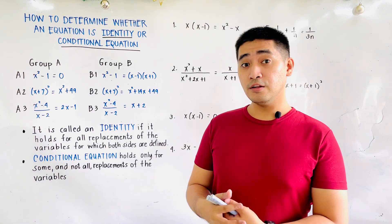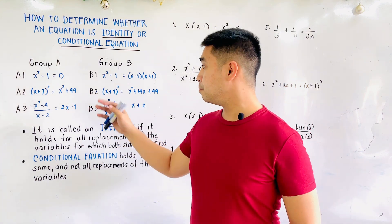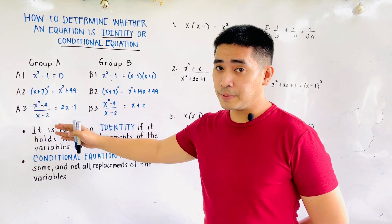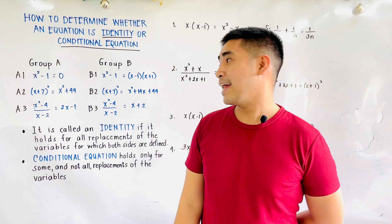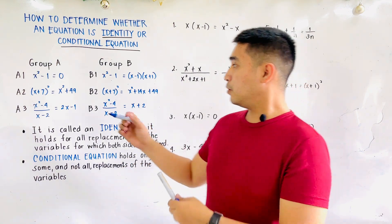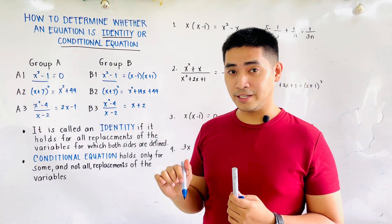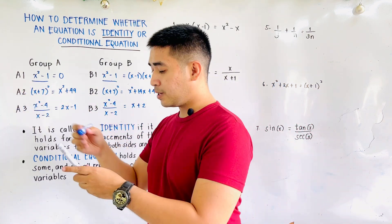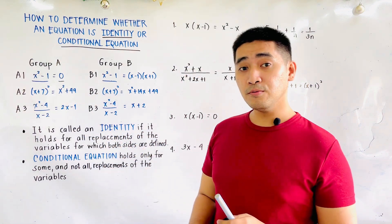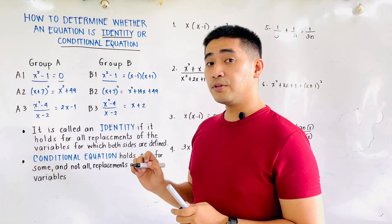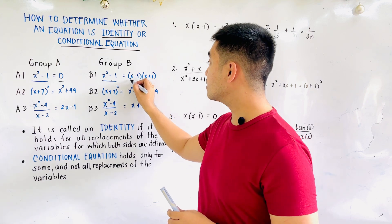Let us first look at these two groups. We have Group A and Group B. These are the given for Group A and these are the given for Group B. We both have the same given for A1 and B1, and that is x squared minus 1. For A1, x squared minus 1 is equal to 0. While for B1, the given is x squared minus 1 is equal to the quantity of x minus 1 times the quantity of x plus 1.